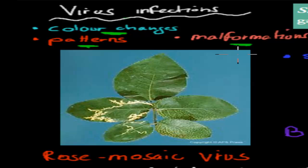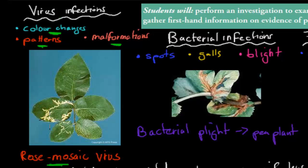So these are signs that a virus has infected this leaf. An example is the rose mosaic virus. So this is an example of a color change and a pattern as well. You can see the color change — this is the infected area. But you can see it actually makes a nice pattern. That's why it's called a mosaic virus, because it has this nice pattern. But this is a sign of an infection, and more specifically of a virus infection.